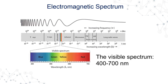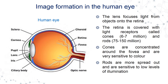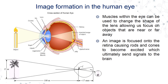Then we look at the electromagnetic spectrum and focus more on the visible spectrum. We examine the structure of the human eye and how the image is formed in the human eye — how an object placed in front of the eye is perceived and how the image is actually formed on the retina.